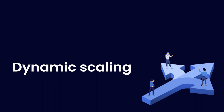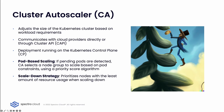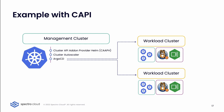Now that you know the proper resource requests and limits to set, you can start working with autoscaling. We're going to talk about Cluster Autoscaler, VPA, HPA, and KEDA. Cluster Autoscaler has the ability to resize the Kubernetes cluster based on workload requirements — it runs as a Kubernetes deployment within the Kubernetes control plane, integrated either with your cloud providers directly or through Cluster API in the management cluster. If Cluster Autoscaler detects pods in pending state, it will select a node group to scale based on pod constraints using a priority score algorithm. Conversely, if the cluster is utilizing fewer resources, it will select nodes with the least amount of resource usage for scale-down.